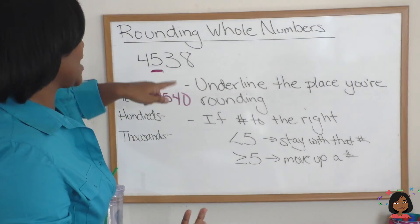So I'm going to erase this. And I'm going to now underline my five. It says to look to the right. What number is that? It's a three. Well, the three is less than five. So we're going to stay with this five. And if we round, our number is going to be 4500. We've rounded to the hundredths place.